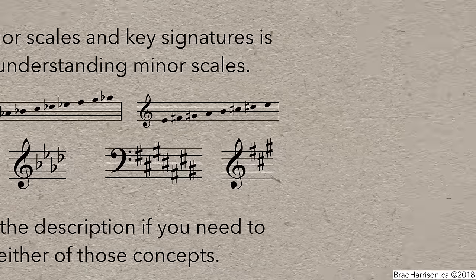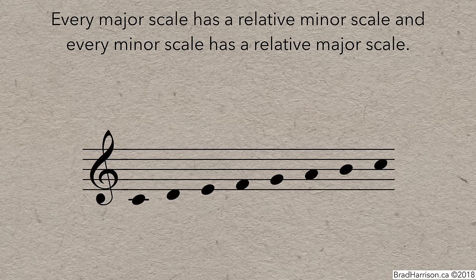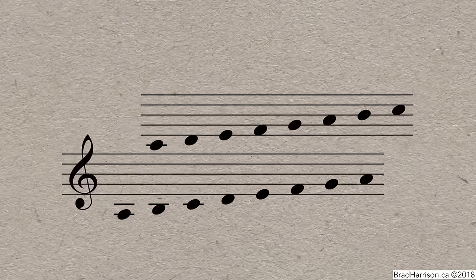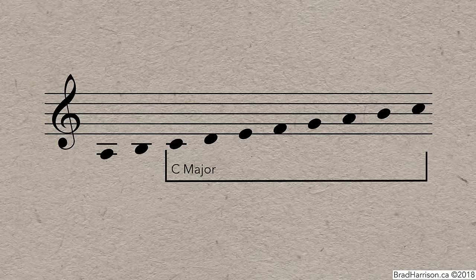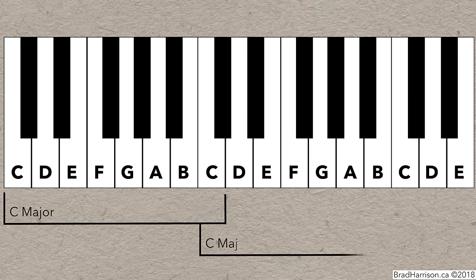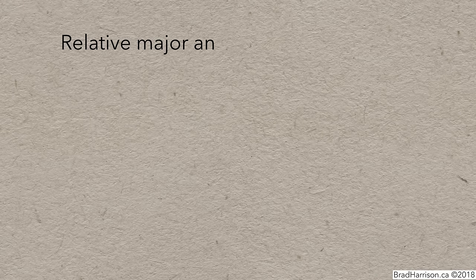Major and minor scales are so closely related that every major scale has a relative minor scale, and every minor scale has a relative major scale. Consider C major and its relative minor scale, A minor. They're built using the exact same notes. If we arrange and combine the scales, it's clear they're basically the same scale, just starting in a different place. On the piano, a two-octave C major scale contains an A minor scale in the middle. Some people think of the minor scale as starting on the sixth note of the major scale. Relative major and minor scales also share a key signature.